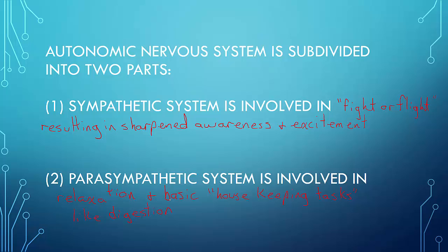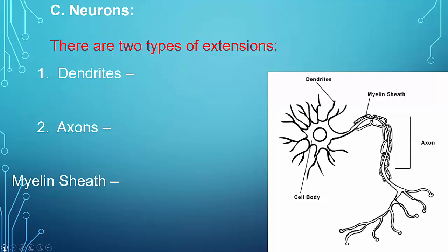Okay, so those were the three functions of the nervous system. Now let's look at the parts of the nervous system itself. Let's get a little bit more specific than just the central or the peripheral nervous system. We have neurons. Neurons have a unique structure. They are a cell body with many extensions.